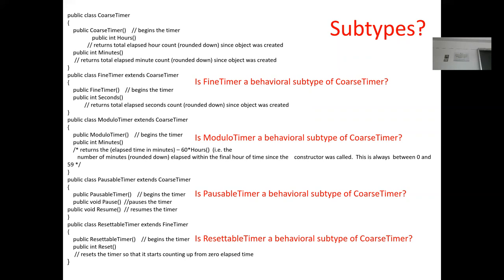Does anyone remember what the Liskov Substitution Principle basically comes down to? A student responds: superclasses can replace subclasses? You can pass an instance of a subclass as if it were the superclass. So for example, you have an orange — it is a fruit — and you can pass it to anything that requires a fruit. You can pass an orange or a banana. That's the general idea of polymorphism, but the Liskov Substitution Principle gives guidelines for how to do that safely.